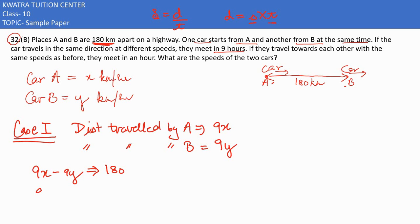Then what I can do in this equation is take 9 common: 9(x - y), and if 9 cancels, I would get 20. So equation 1 is x - y = 20.